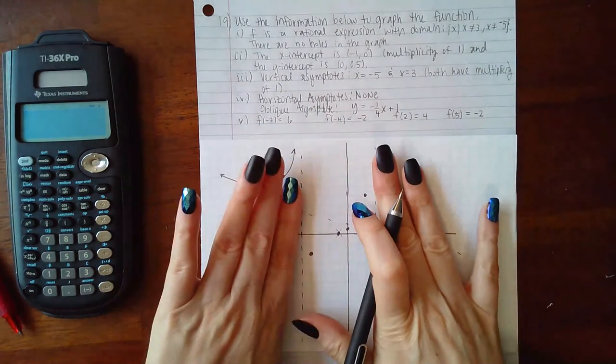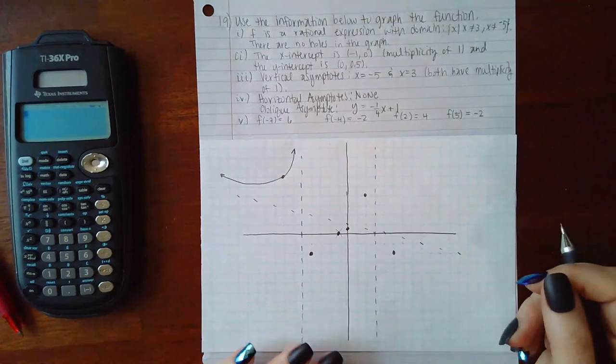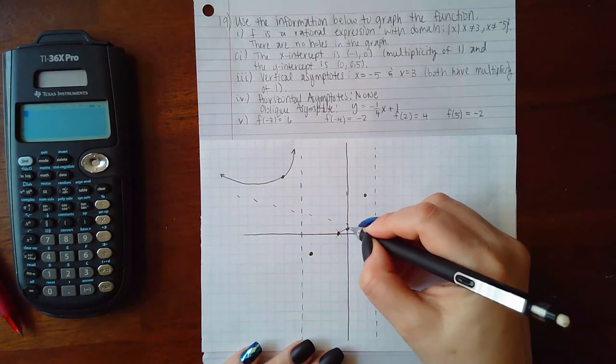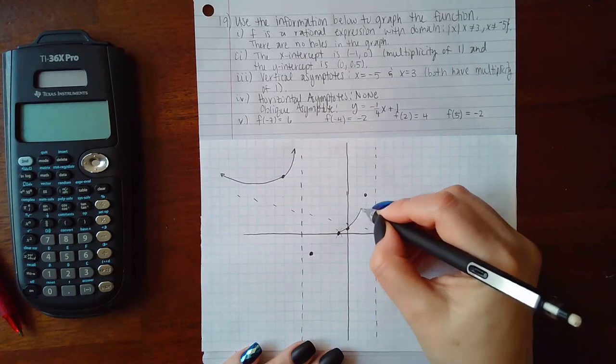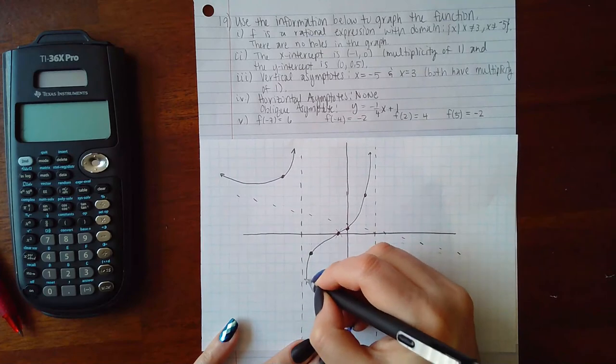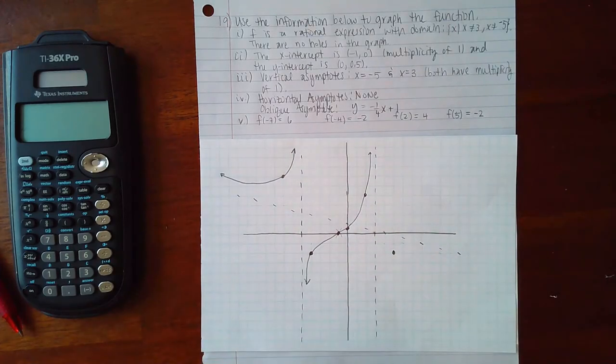In the middle will be another section of the graph between the two vertical asymptotes. And since I have these points here we can see that it's going to be trailing off upward and then it's going to be trailing off downward. And I do cross through that x-intercept like we anticipated because of its multiplicity.